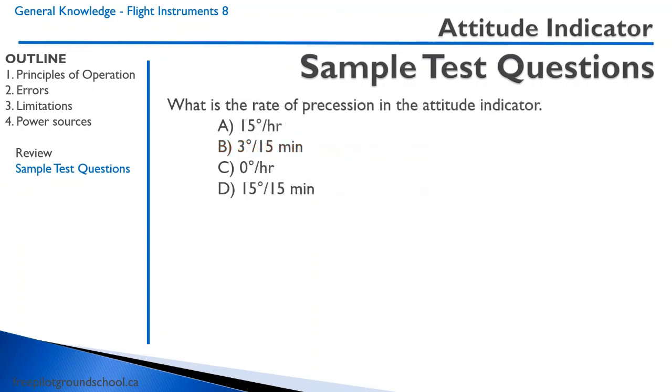What is the rate of precession in the Attitude Indicator? A, 15 degrees per hour. B, 3 degrees every 15 minutes. C, 0 degrees per hour. Or D, 15 degrees in 15 minutes.